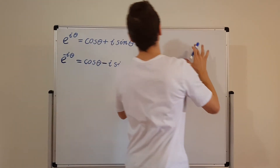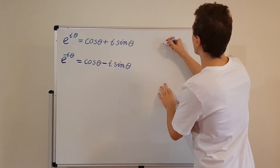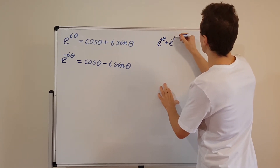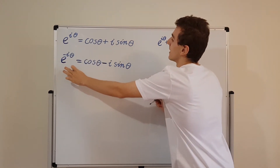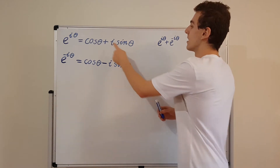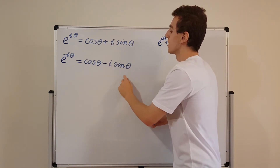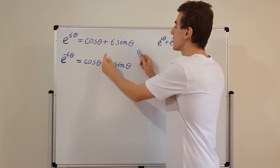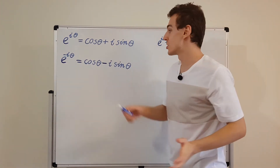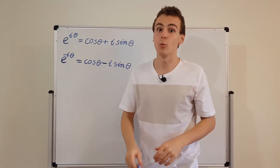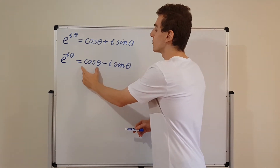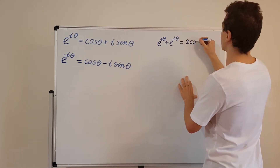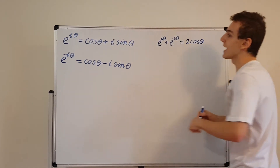When we add the two expressions, on the left hand side we get e to the i theta plus e to the minus i theta. On the right hand side, the imaginary terms cancel — the i sine theta and minus i sine theta are additive inverses, so they sum to zero. We're left with cosine of theta plus cosine of theta, which is two cosine theta. So adding Euler's formula to its complex conjugate gives us e to the i theta plus e to the minus i theta equals two cosine theta.